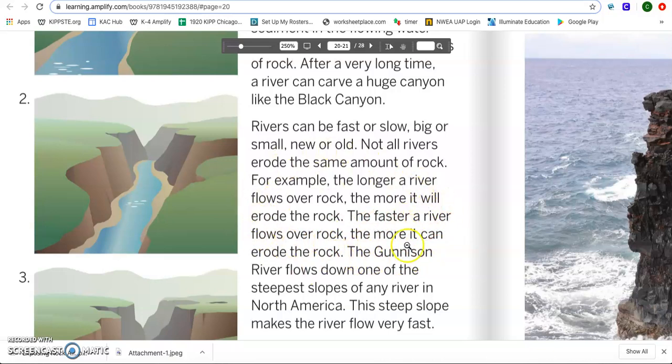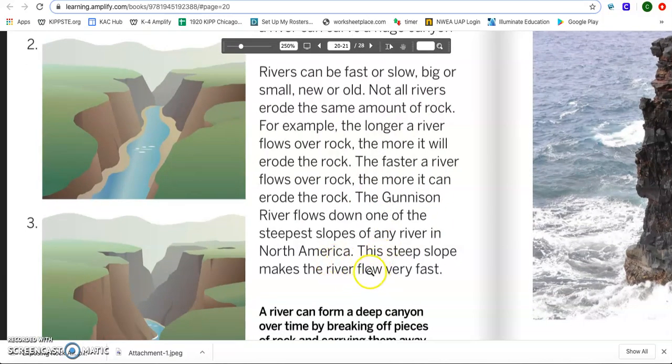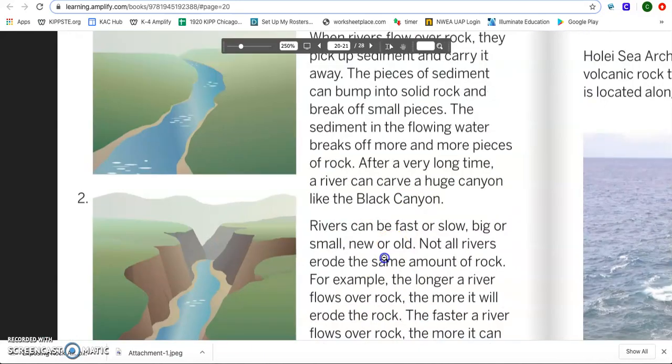This section right here is going to help you make your prediction in your classwork. Before you start your sim, you're going to have to answer two questions that's actually going to ask you to predict which is going to erode the quickest. And this right here is going to tell you that. So I'm going to reread that. For example, the longer a river flows over rock, the more it will erode the rock. The faster a river flows over rock, the more it can erode the rock. The Gunnison River flows down one of the steepest slopes of any river in North America. This steep slope makes the river flow very fast.